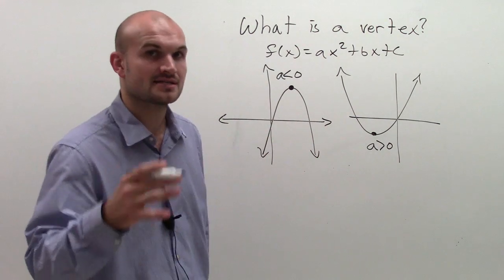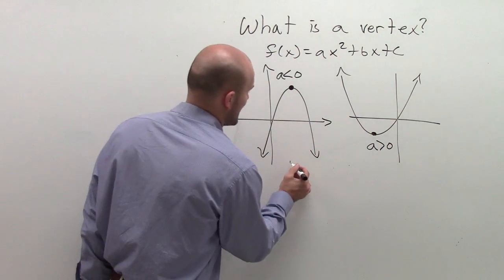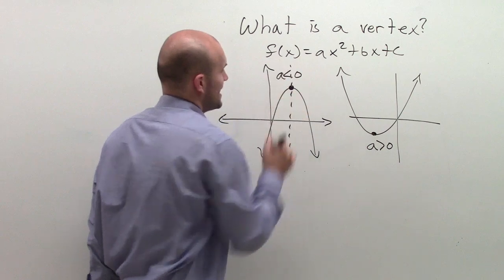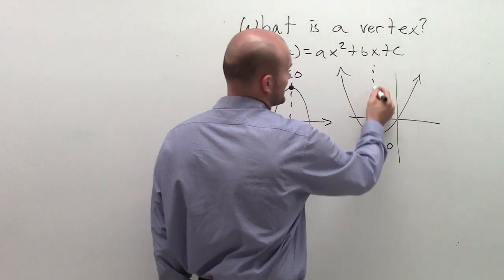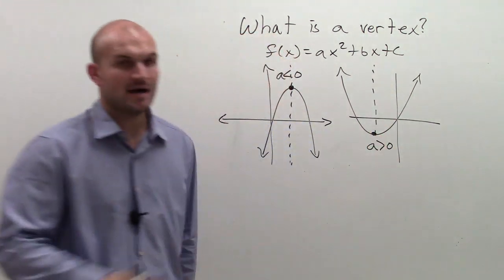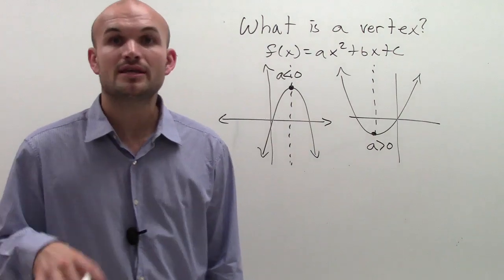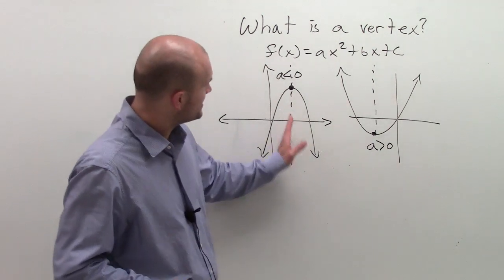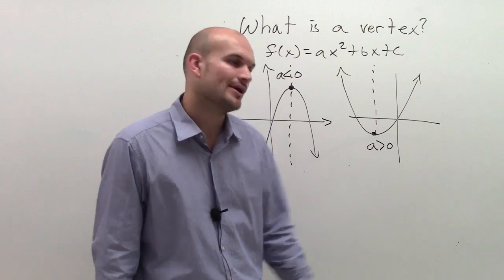To determine the vertex, what we need to also look at is the axis of symmetry. Remember, the axis of symmetry is going to be the line that's going to be symmetrical about our parabola. And one thing that you'll notice about the axis of symmetry is that it goes through our vertex, all right?